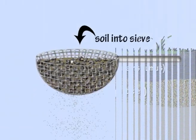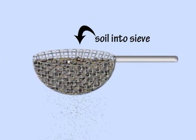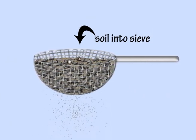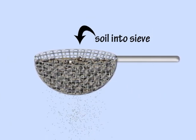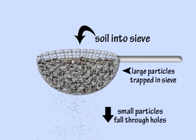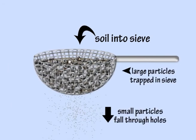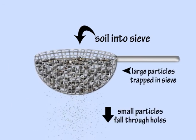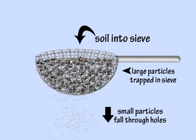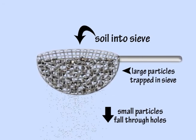You can use a sieve to separate the different sizes of particles in a soil. The large particles of soil are left behind in the sieve, because they are bigger than the holes in the mesh of the sieve.